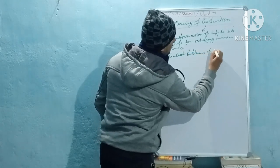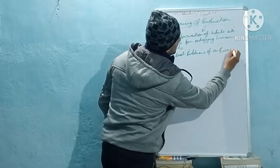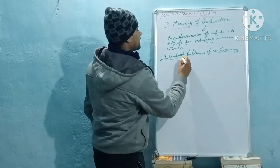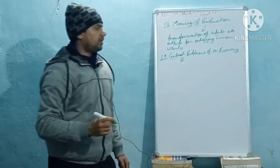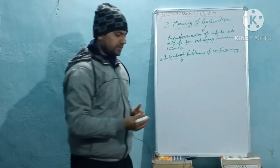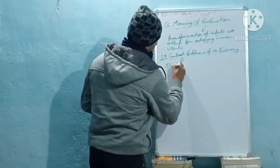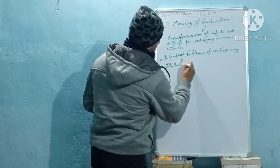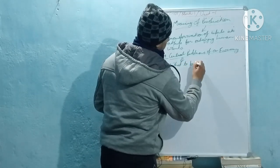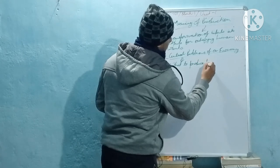What are the different kinds of problems of an economy? The first problem is 'what to produce.' The economy needs to decide what to produce so that human wants can be satisfied.